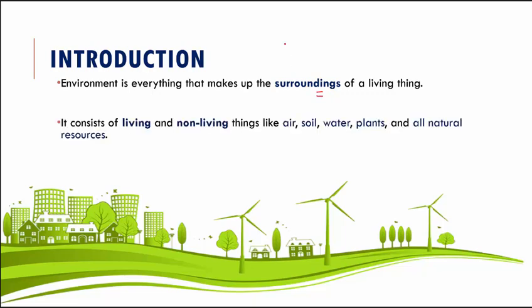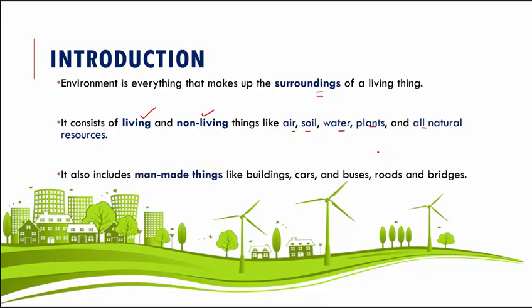The environment consists of both living as well as non-living things. For example, we have air, soil, water, plants, and all other natural resources that constitute our environment. Apart from this, we also have certain man-made things like buildings, cars, buses, roads, and bridges that also make up our environment.